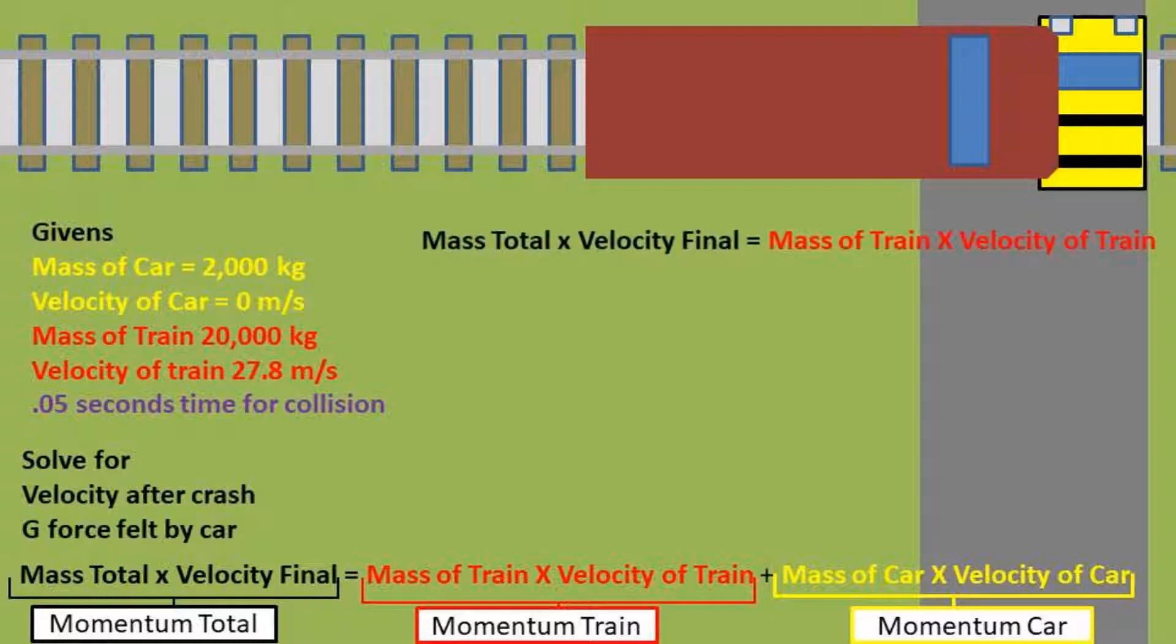Being that the car has 0 velocity, we can eliminate the mass times the velocity of the car from the equation. We are left with the mass of the train times the velocity of the train is equal to the mass total of the system times the velocity final. The mass total is simply the car's mass plus the train's mass. In this case it is 22,000 kilograms.